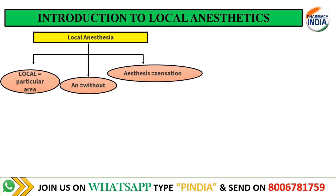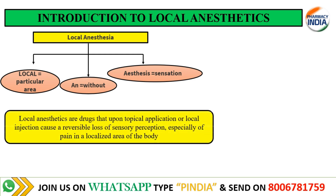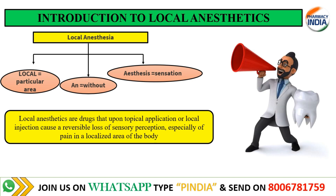In local anesthetics, 'local' means a particular area of the body. So in our body, a particular area is made without sensation. Local anesthetics are drugs used on a particular area or part of the body — if applied topically or injected via IV — resulting in reversible loss of perception. For example, if we have a tooth extraction or tooth surgery, then we apply local anesthetics.